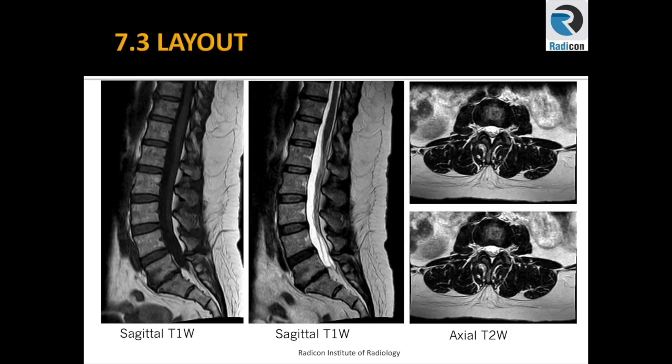If I have to give one tip to beginners for Lumbar Spine MRI, I would suggest spending time on the layout. Be very consistent in how you display your images — it gives great insight into sequences, their limitations, and awareness of subtle changes in appearance across different pathologies. I always place sagittal T1 and T2 sequences side by side on the left side of the screen, and axial images on the right, allowing an initial survey of the spine on sagittal images before disc analysis at each level.